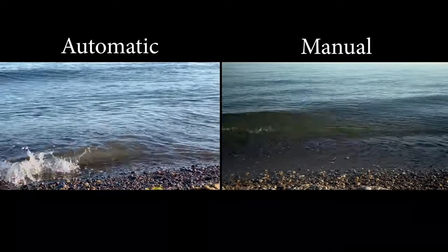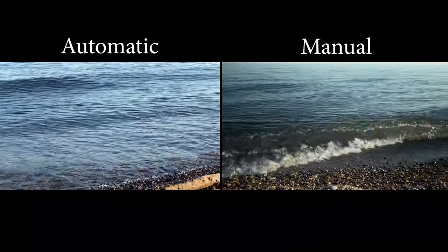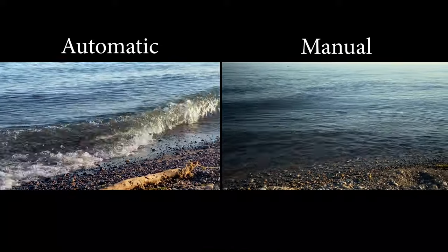Why film in manual mode when automatic mode is so easy — just press record and you're done? Well, here is a video filmed in automatic mode and here is a video filmed in manual. In manual, I'm able to film in 24 frames per second, control shutter speed, get that sweet motion blur, the natural motion rule, and control white balance as well as focus.